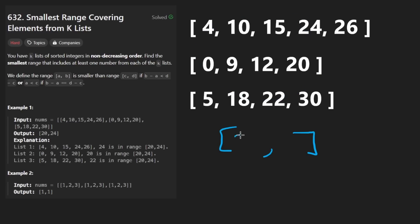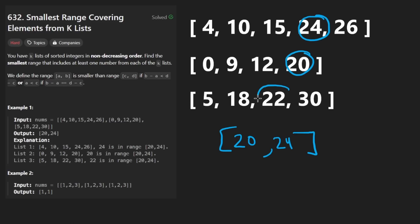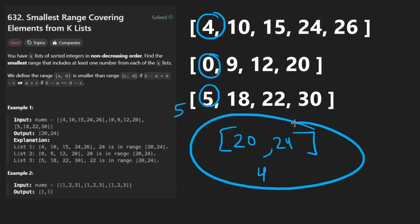In this example, that range would be from 20 up until 24 inclusive, which includes 24 from one list, 20 from another, and 22 from the third. If you try like zero through five, it also works because it includes four, but the length of that range is five, whereas this range has length four. So this one is smaller.